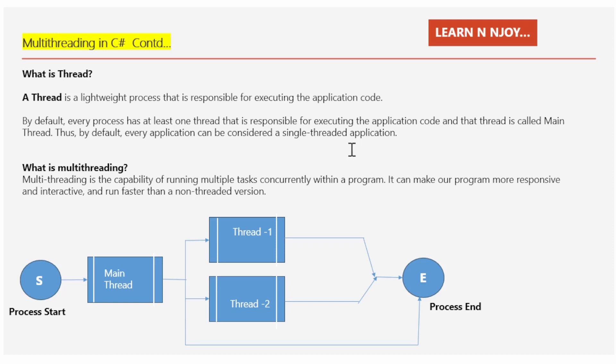Now let's talk about multi-threading. What is multi-threading? Multi-threading is the capability of running multiple tasks concurrently within a program. It can make our program more responsive and interactive and run faster than a non-threaded version. Let's understand multi-threading with the diagram shown here. The process starts the main thread, and the main thread starts two threads — thread one and thread two. Thread one, thread two, and the main thread do their work concurrently, then the process finishes. That's a simple representation of multi-threading.